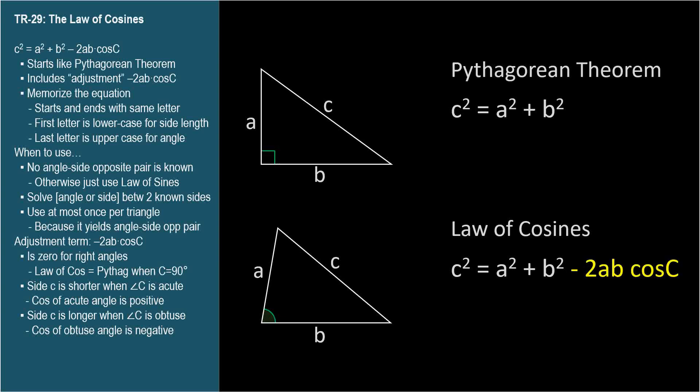c squared equals a squared plus b squared, minus 2ab cosine C. This works for all triangles, whereas the Pythagorean Theorem applies only to right triangles.